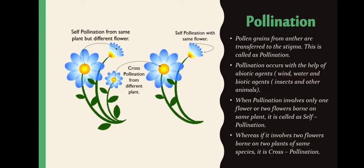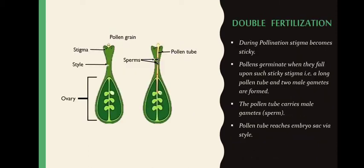For example, a butterfly is a biotic agent for pollination. When a butterfly sits on one flower, pollen grains stick to its body; when it sits on another flower, it transfers those pollen grains to the stigma of that flower. When pollination involves only one flower or two flowers on the same plant, it is called self-pollination. If it involves two flowers on two plants of the same species, it is called cross-pollination.